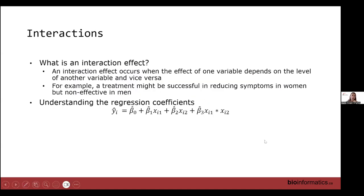Interaction effects look at whether one variable moderates the relationship of another — whether the effect of a variable depends on the level of another variable. For example, if we're looking at the effect of a treatment on some outcome, we might check for an interaction with sex: if the treatment reduces symptoms in women but is non-effective in men, that would indicate an interaction effect with sex. In the linear regression model, the interaction term simply multiplies the two covariates together: if x1 is sex and x2 is treatment, then x1 times x2 is our interaction.